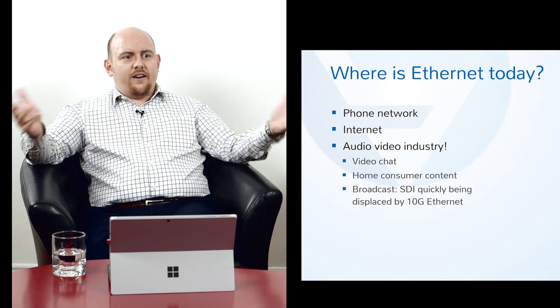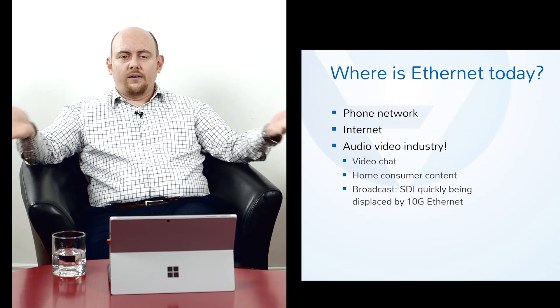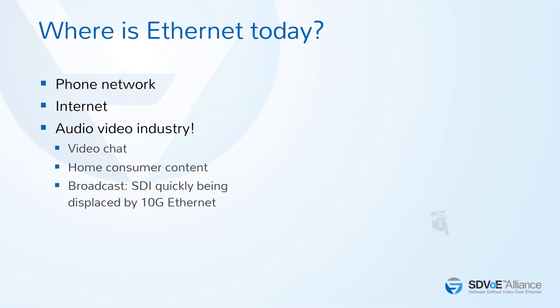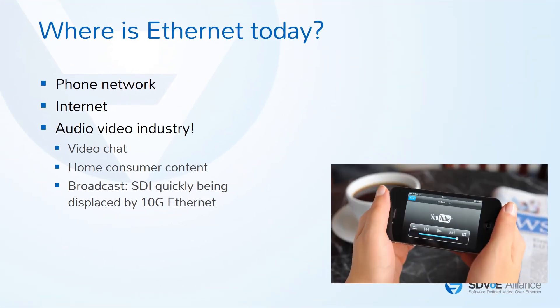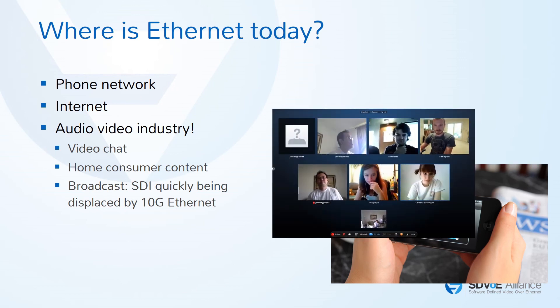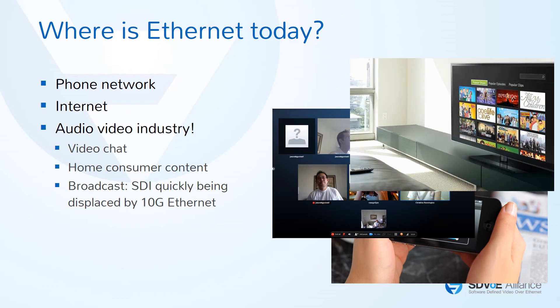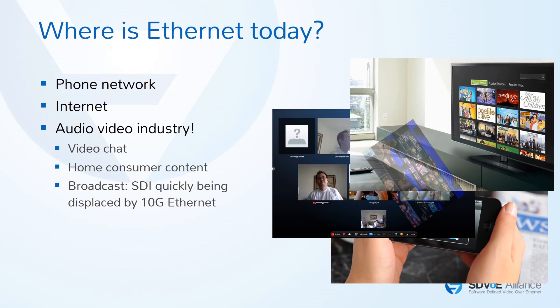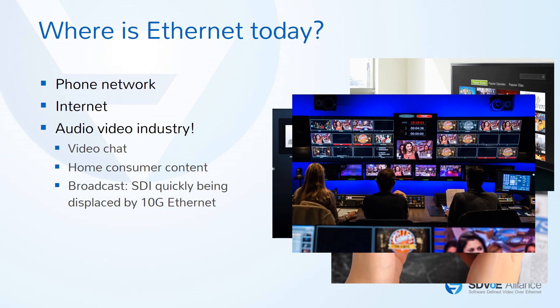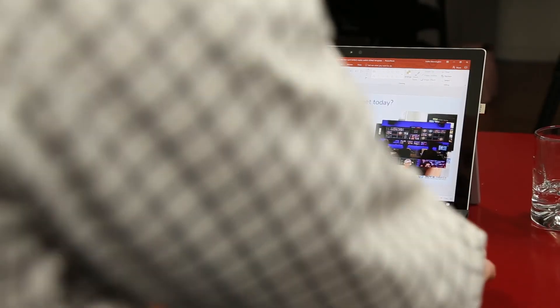Where is Ethernet today in pro-AV? It's in pro-AV and elsewhere — it's the phone system, it's the Internet itself. In the audio-video space beyond pro-AV, it's consumer AV: you get your videos from YouTube and from Facebook. Your cable TV system is delivered over IP infrastructure these days. The broadcast side of AV has already gone through their transition from SDI matrices into 10-gig IP-based distribution. So in fact, pro-AV is a bit of a holdout, and we'll talk in a minute about why that is and why it doesn't have to be that way anymore.